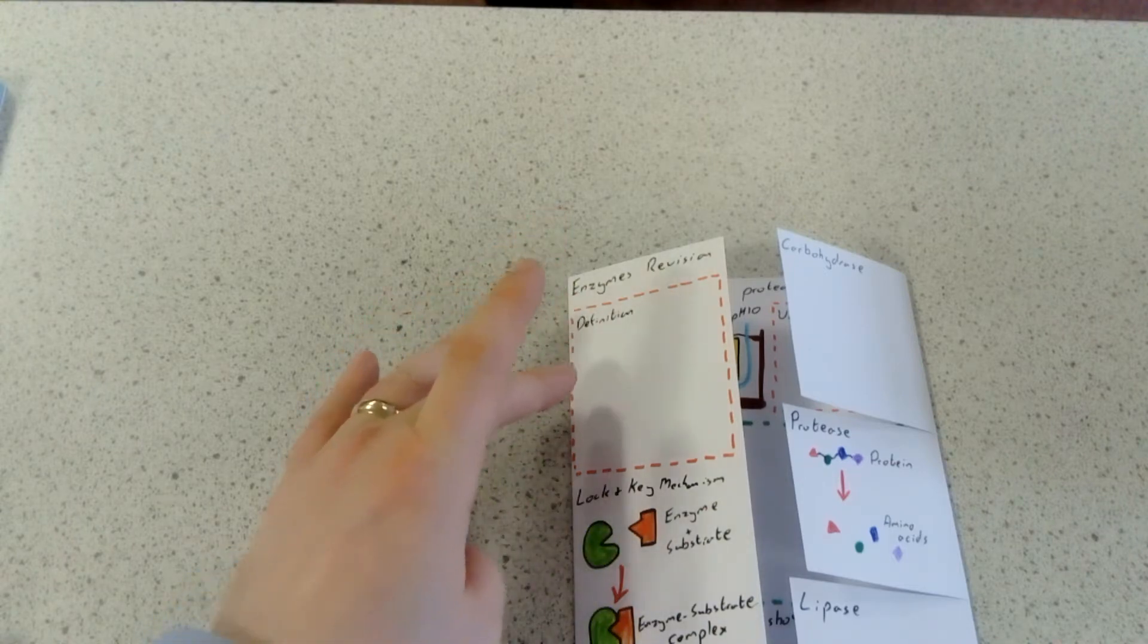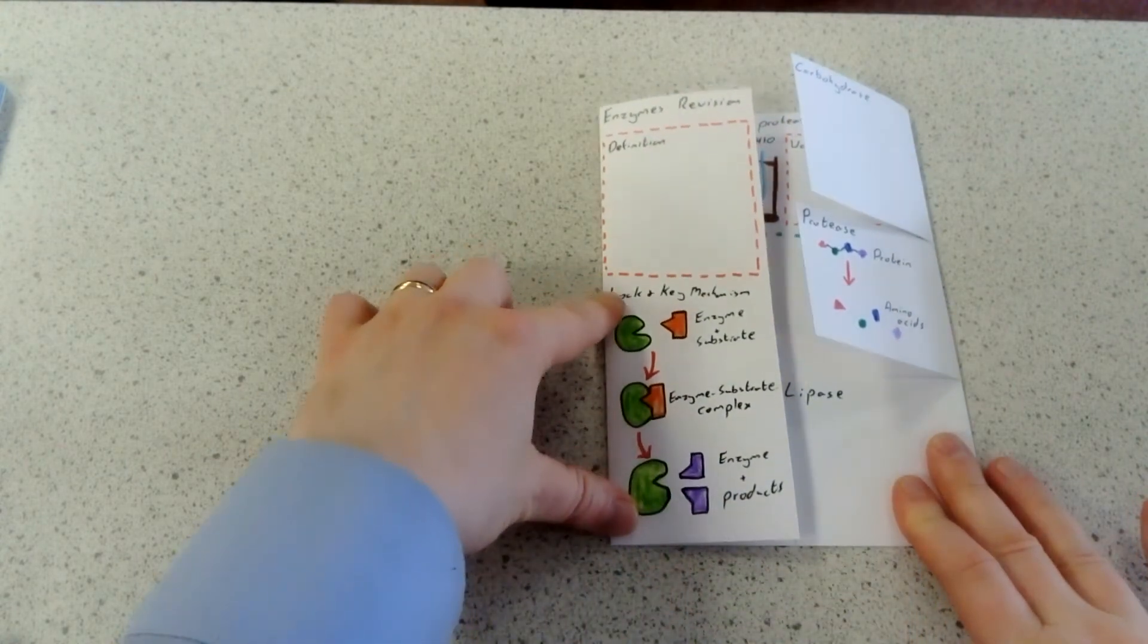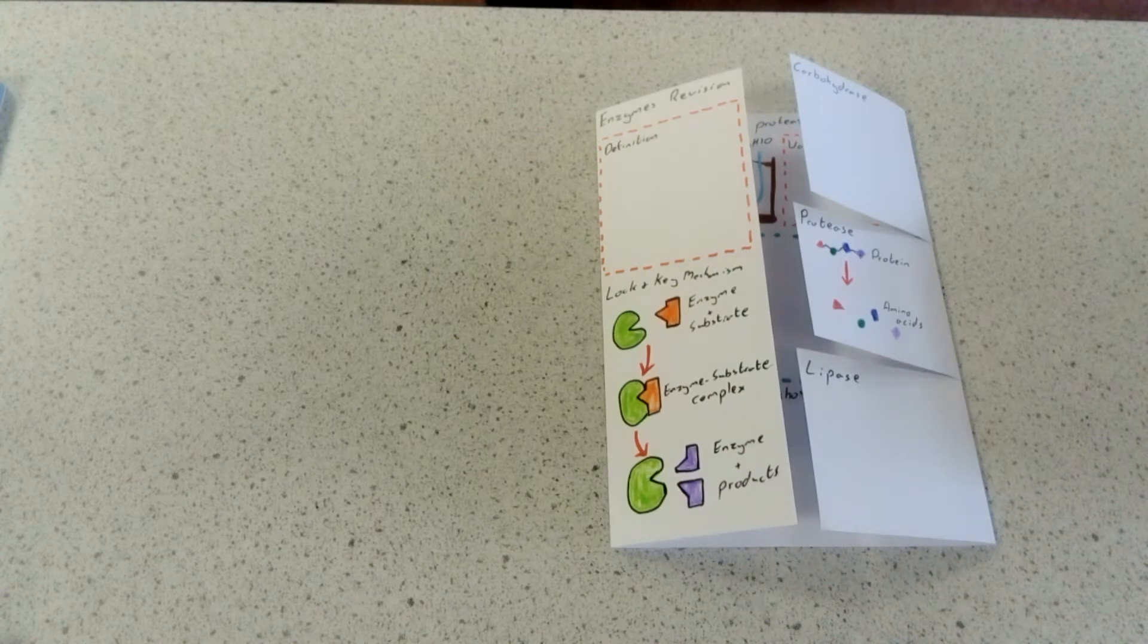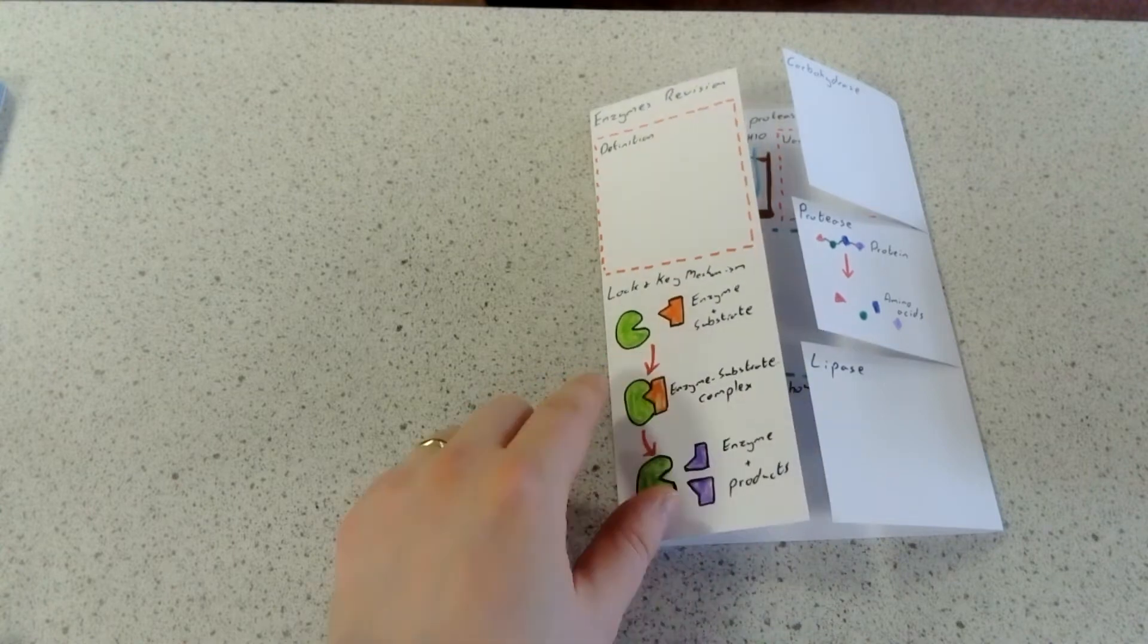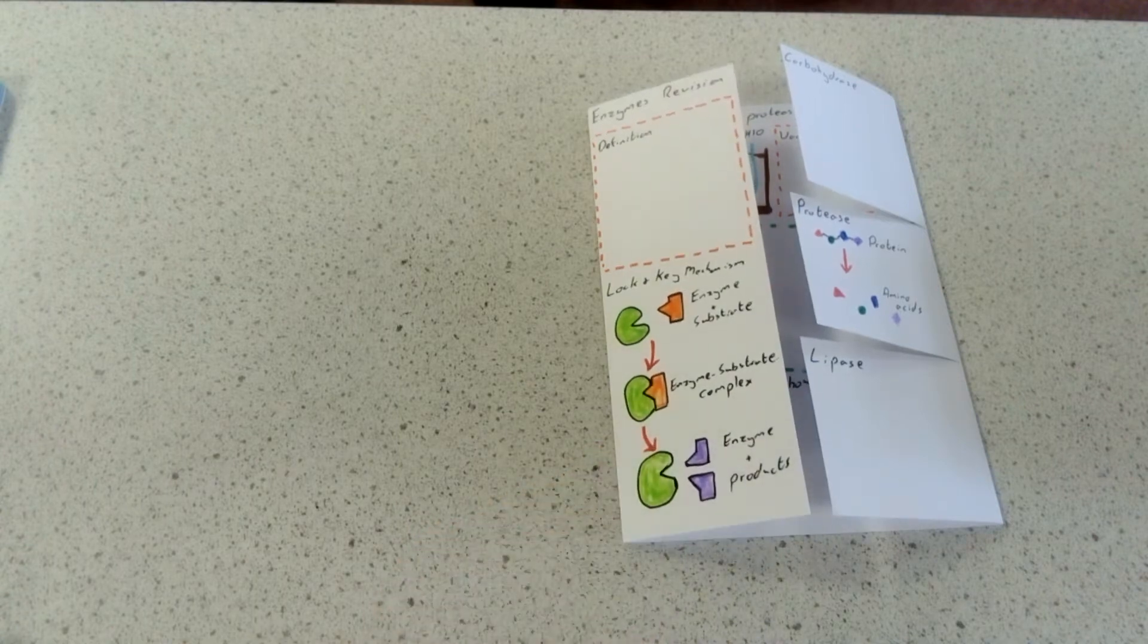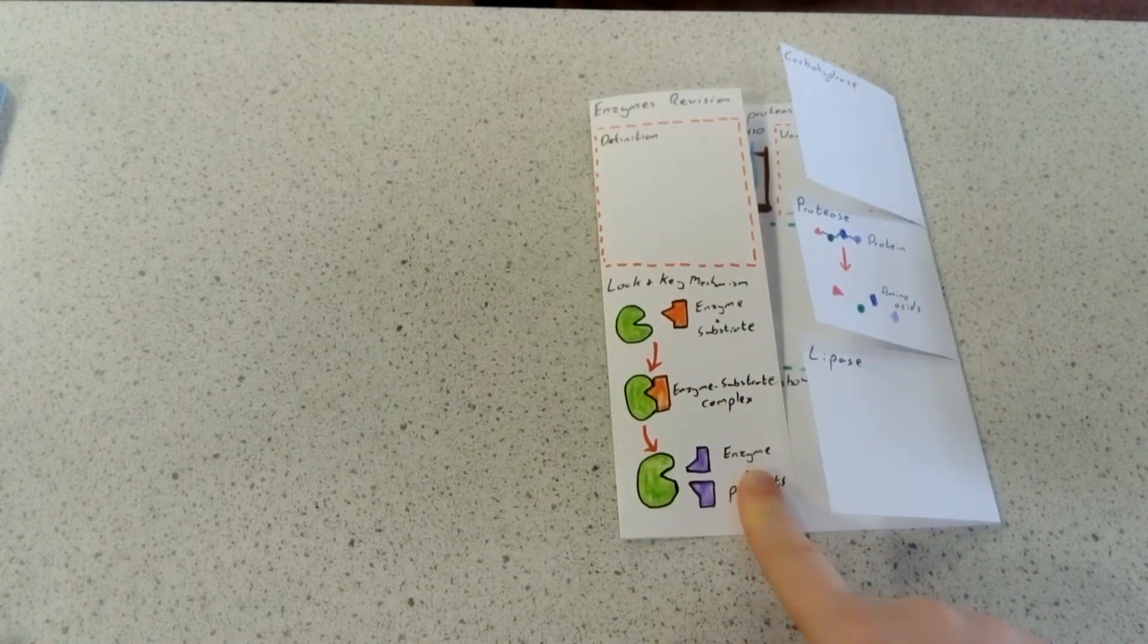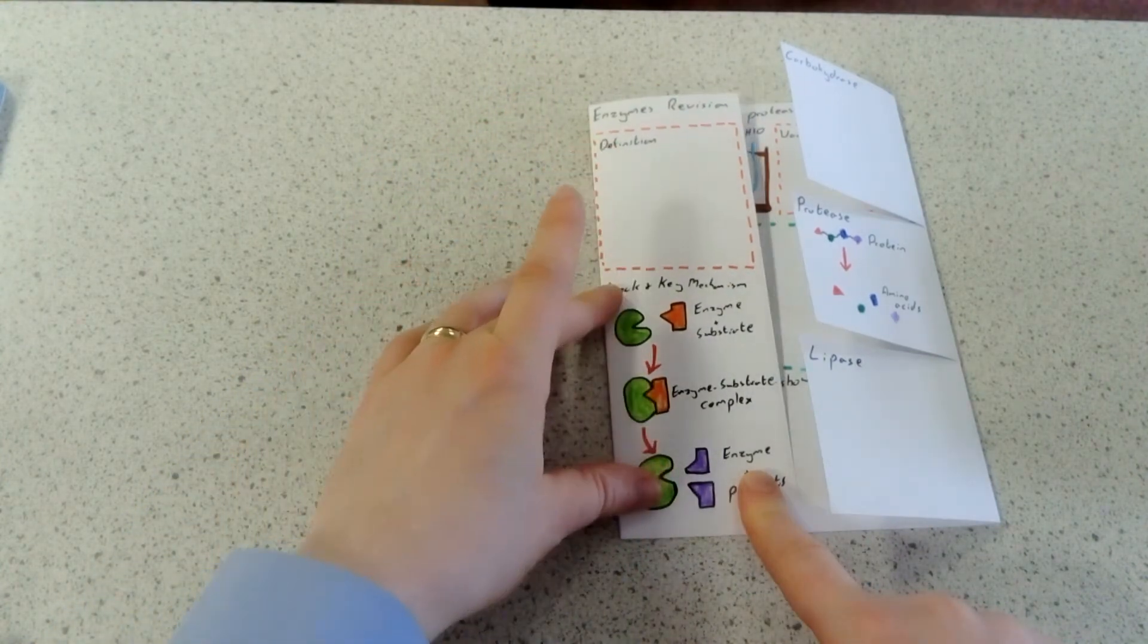Underneath that, do something on the lock and key mechanism. Remember, the lock and key mechanism describes how enzymes work. Start with an enzyme and substrate that forms an enzyme-substrate complex. It breaks down the substrate, products are released, and you're left with an enzyme. Do that underneath your definition—it's important that you know that.